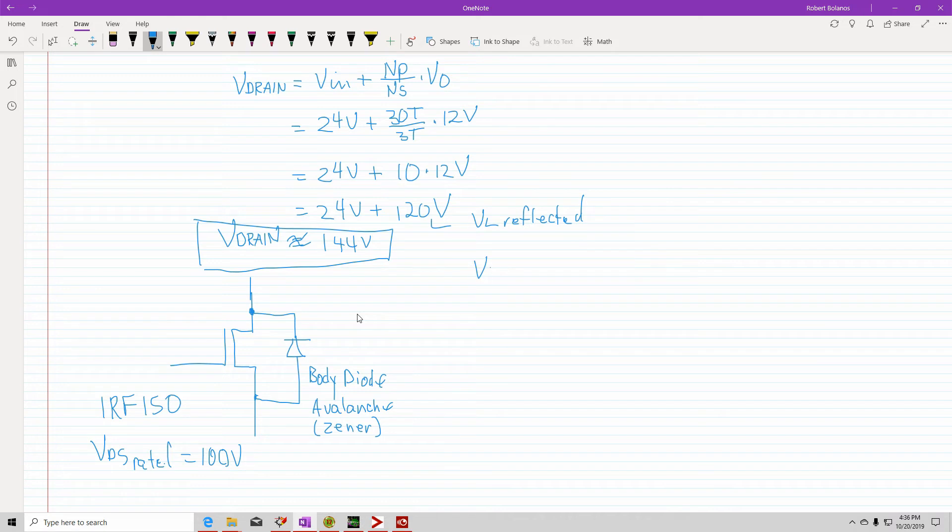so basically it's greater than VDS rated. Your MOSFET is probably going to get hot and you might blow it. And during the time that it's heating up, V out will never reach, which in this case we're hoping that you get 12 volts. You're not going to get 12 volts. Why? Because there's a body diode across the MOSFET and it acts like a Zener.